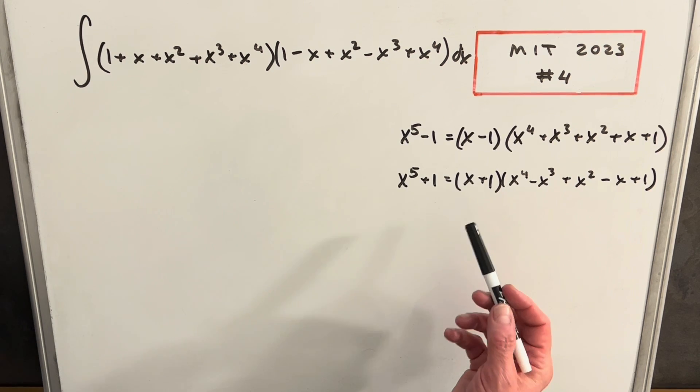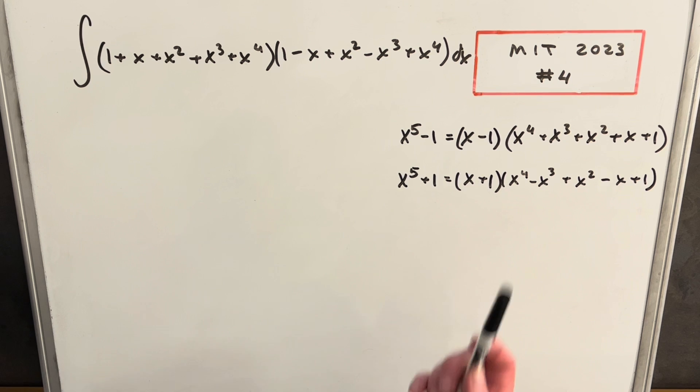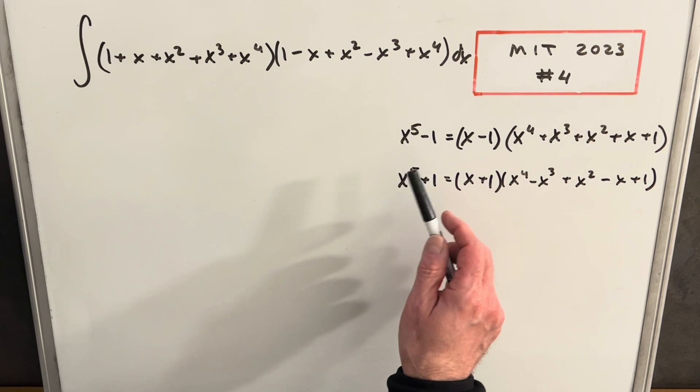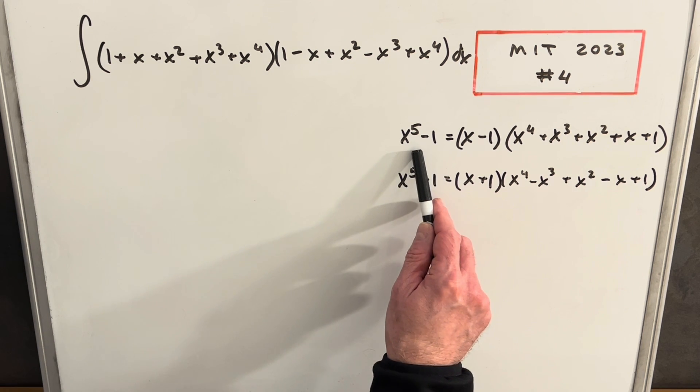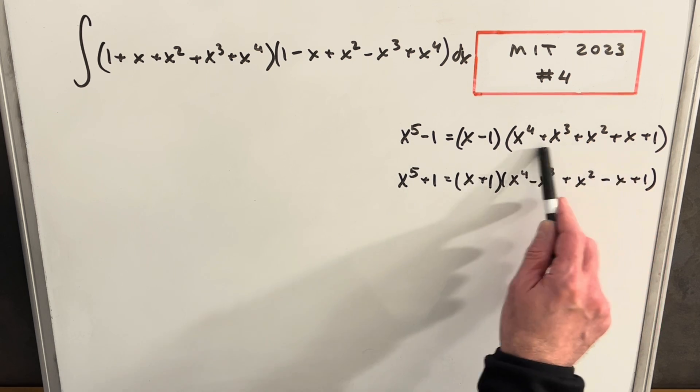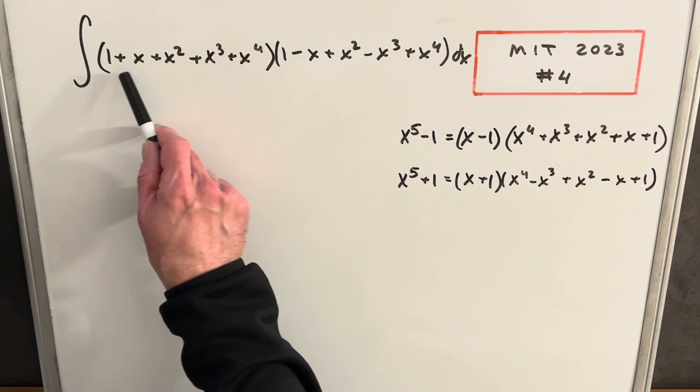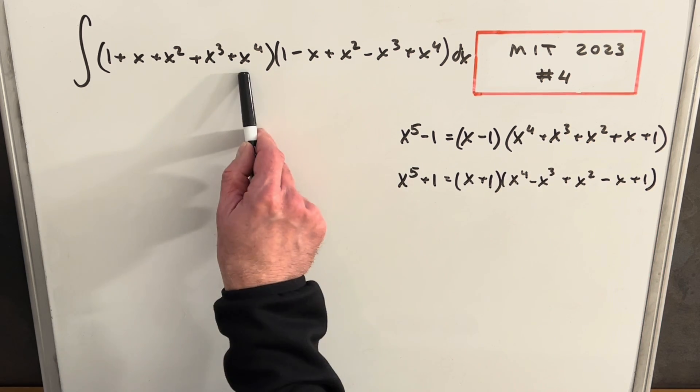So what I'm going to do is over to the right here, we have a couple of algebraic identities that we can use. You'll notice now for this one, x⁵ - 1, you'll notice what we have over here—all this long term of addition—this is exactly this in the reverse order.